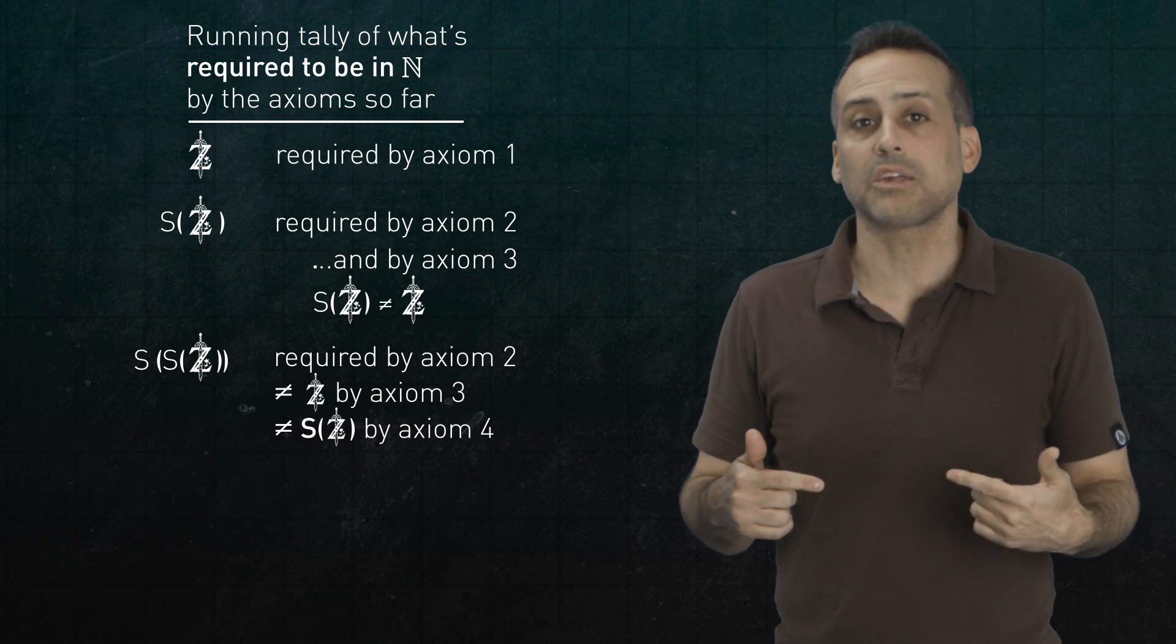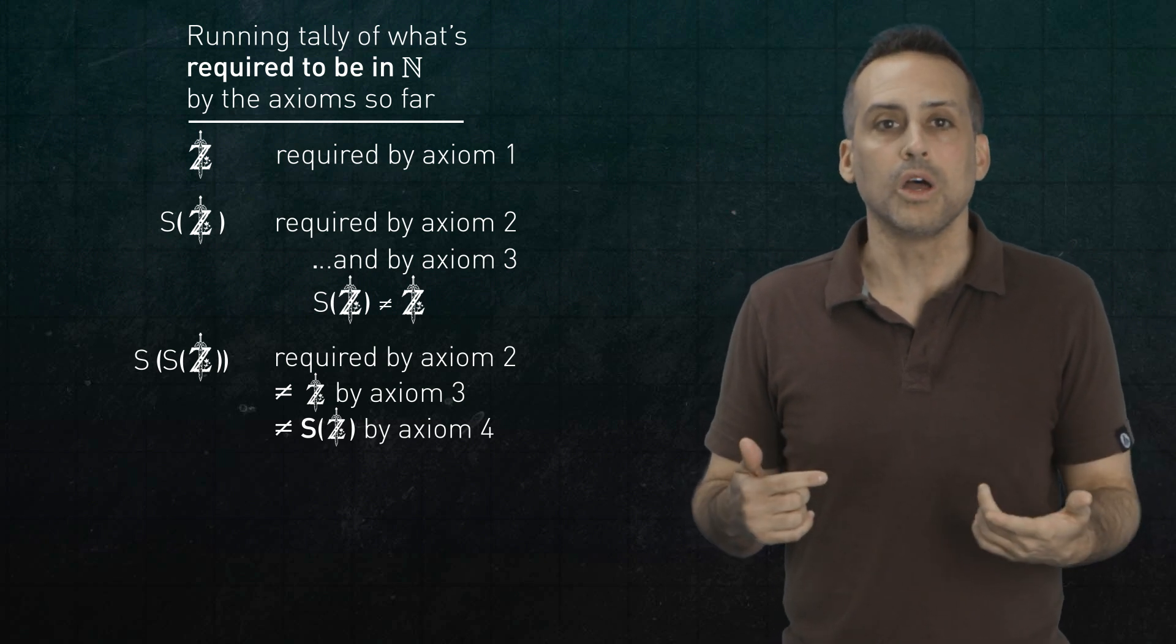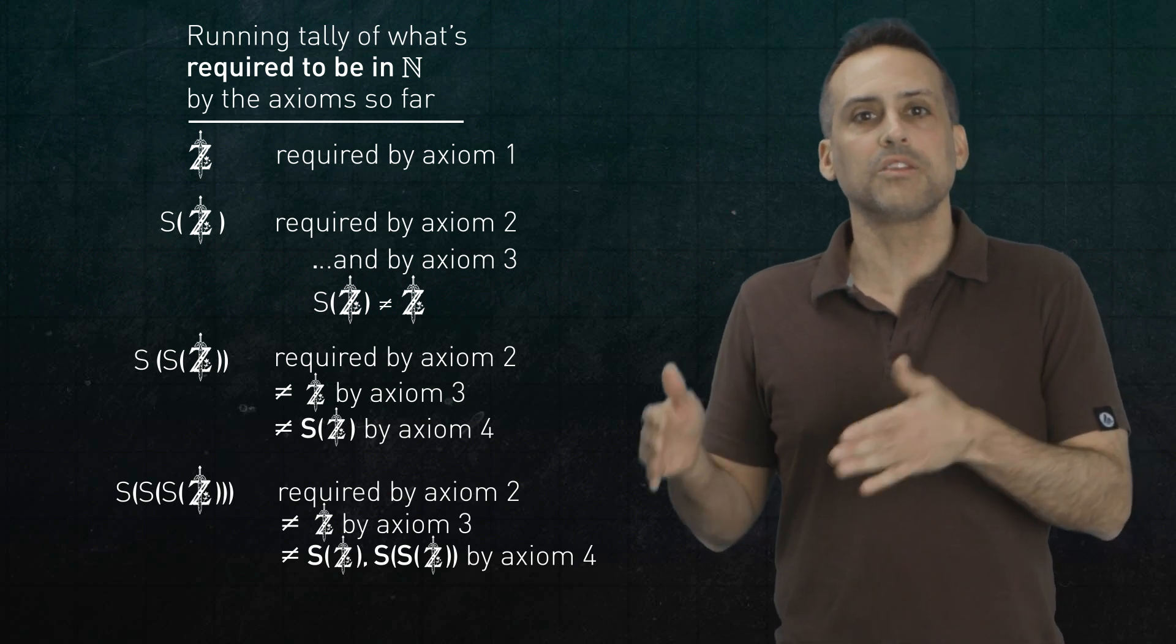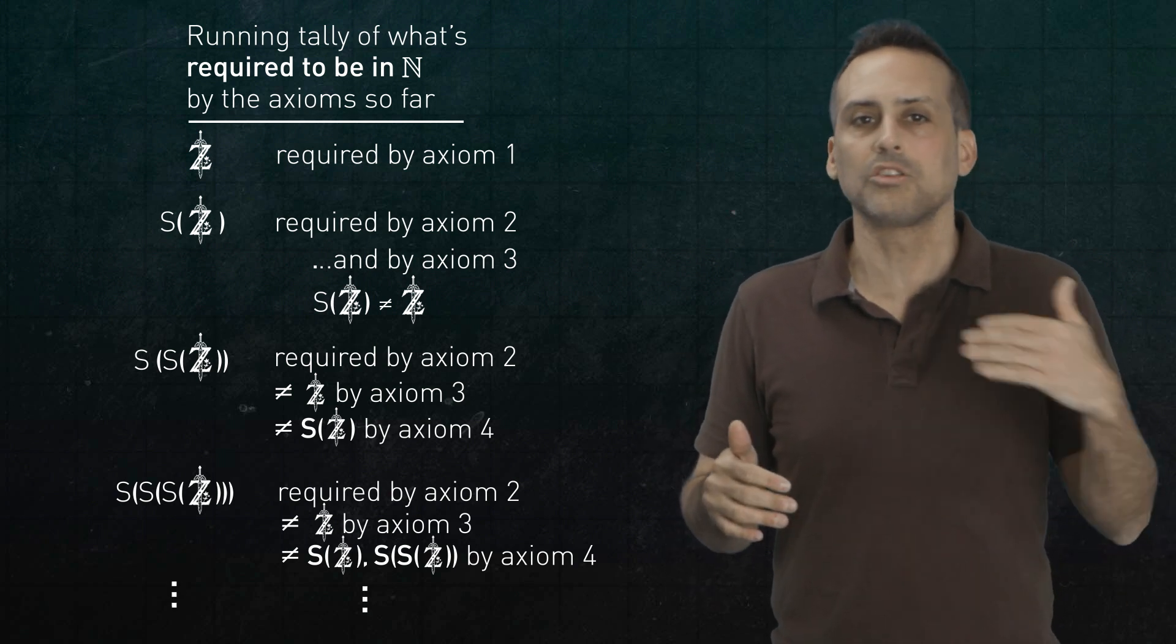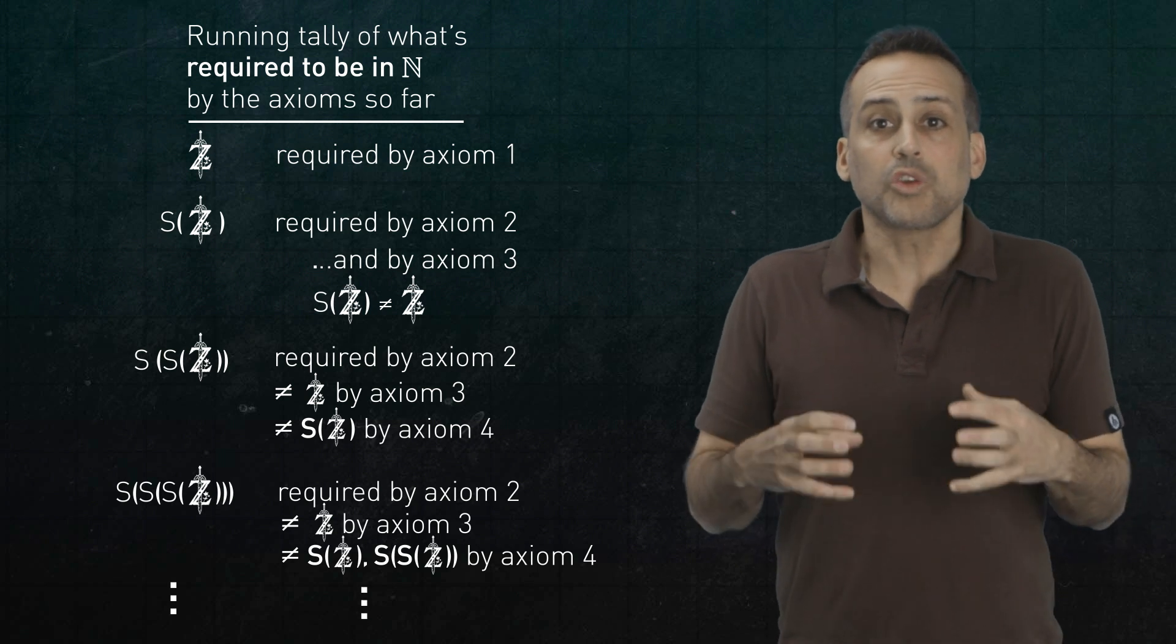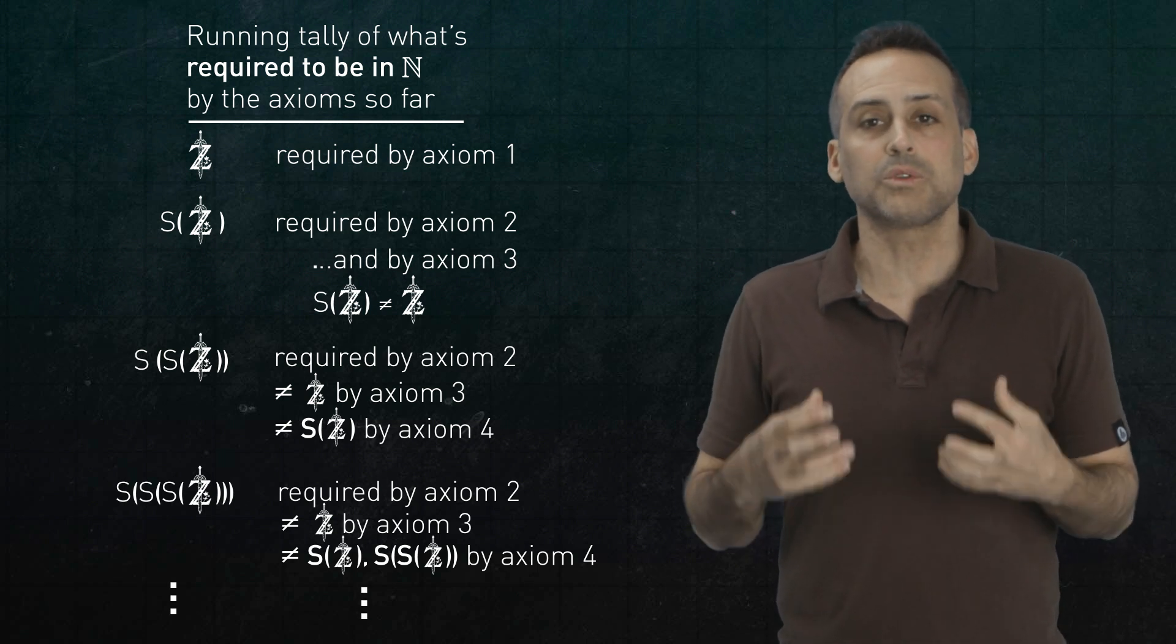Now we keep using axioms 2, 3, and 4 over and over. So s of s of s of Zelda will be in the set. And it's different from Zelda and from every element we've already mentioned, and so on and so on. This is starting to look like an infinite list of counting numbers.